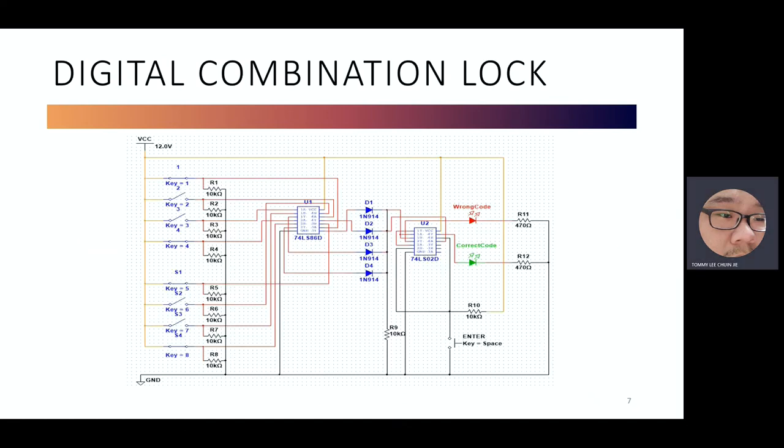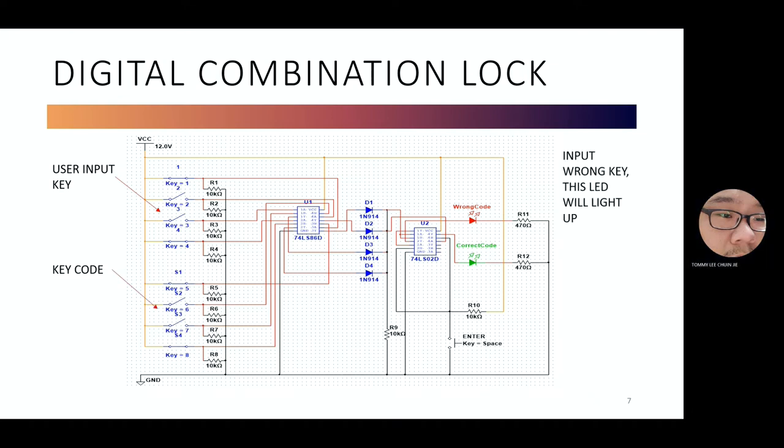This is our circuit. So first of all, user will input their key at the first switch assembly. Second, the key code will be pre-entered at the data entry point. And next, if the user input wrong key, the red LED will light up and shows it is the wrong code entered. Next, if the input is correctly entered, the green LED will light up.